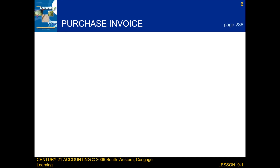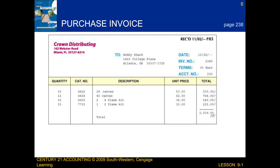Next we're going to be talking about a purchase invoice. What we're essentially looking at here is a purchase invoice from Crown Distributing, showing their address and location. This purchase invoice is being sent to Hobby Shack, showing their address as well. It was received on November 2nd. The purchase invoice number is 83, the date is October 26, the invoice number is 2389, it has a 30-day term, and the account number is 230. Below all of that we have the quantity, category number, description, unit price, and total — calculated by multiplying quantity times unit price. The total of all those numbers is listed at the bottom.